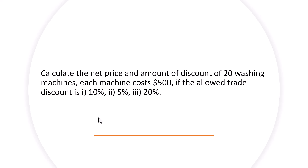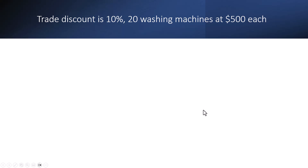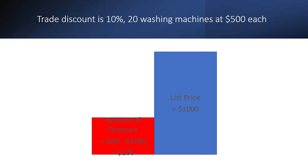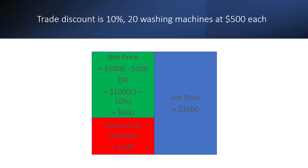First we'll deal with 10%, then 5% and 20%. At 10%, we can calculate the list price, which is 20 washing machines times $500, which is a total of $1,000. The amount of discount — 10% of $1,000 — is $100. The net price can be calculated in two ways: since you already have the list price and the amount of discount, you can subtract them from each other, or you can use the formula: $1,000 times (1 minus 10%), which is $900.